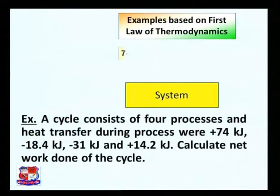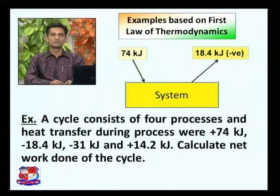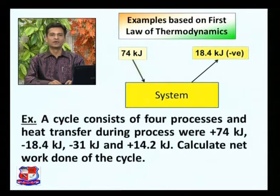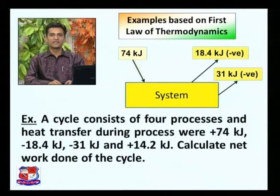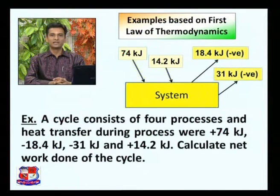In this problem, the system is given, and the heat transfer is positive first: +74 kJ means heat is added to the system. The second value, -18.4 kJ, is negative, so heat is rejected from the system. Third, -31 kJ is also rejected heat, and +14.2 kJ means heat is added to the system. This is the given data, and we have to find out the net work done on the cycle.